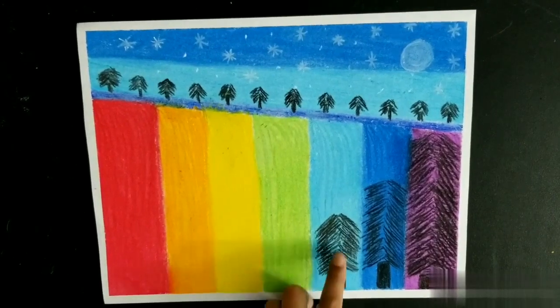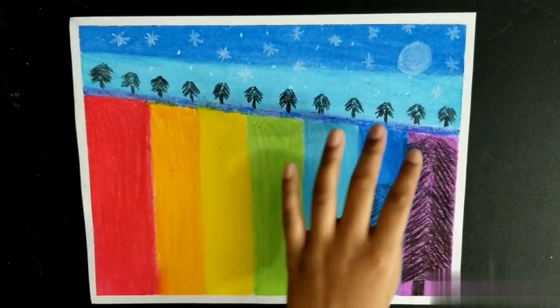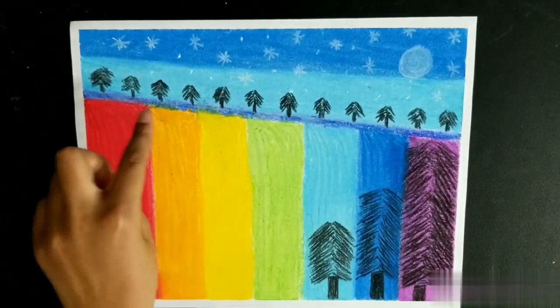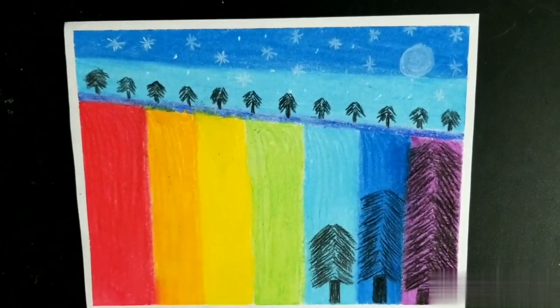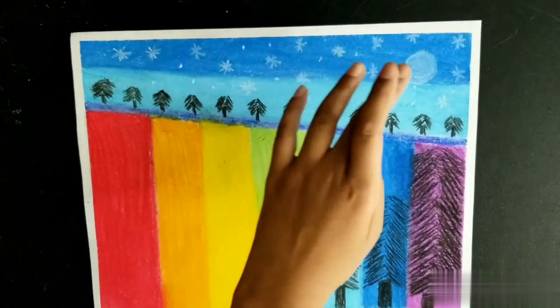So let me explain. These are some trees and there's some trees over here. And this is a rainbow waterfall, and there's some stars and a moon. So I hope you like this drawing.